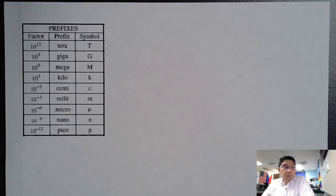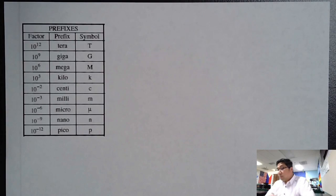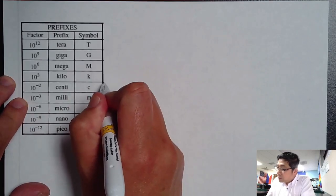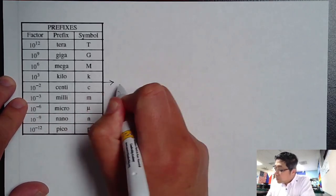Before we proceed with our conversion using one step, let us analyze this table again. First, in between Kilo and Centi, there should be your base unit. So there should be your base.